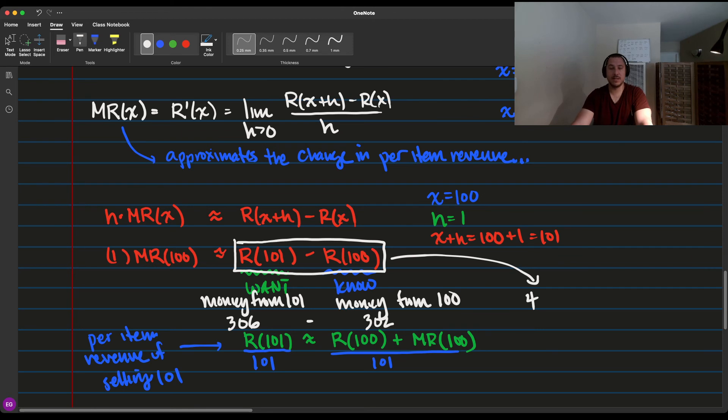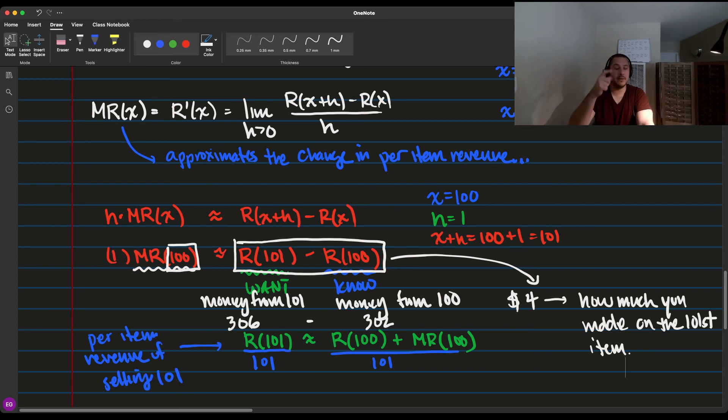Let's say you made $302 from selling 100 of them, and then you made $306 from selling 101 of them. What do you now know about the difference between them, that $4? What does that $4 apply to? The difference between those two values is $4. What can you say this $4 applies to? It's approximately the marginal revenue of the 101st item. This $4 is how much you made on that 101st item.